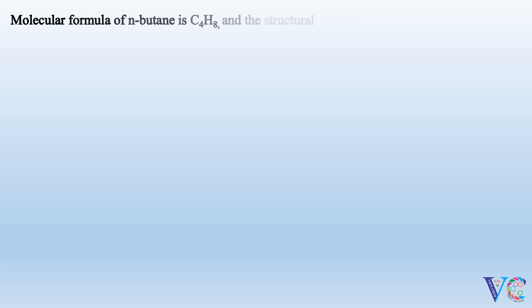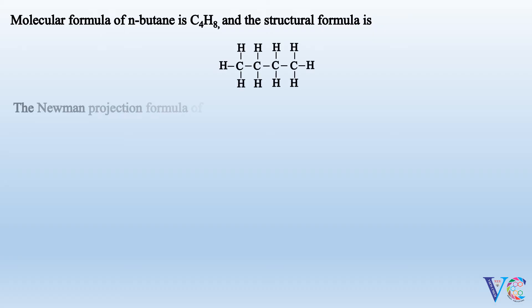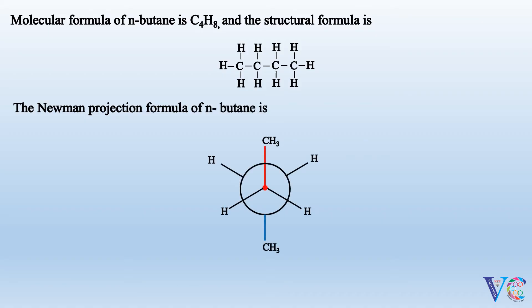Conformational analysis of N-butane. The molecular formula of N-butane is C4H10, and the structural formula is shown. The Newman projection formula of N-butane is shown. The molecule is viewed through the C2–C3 bond.